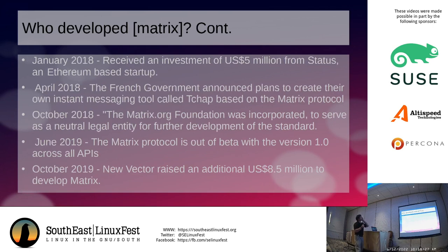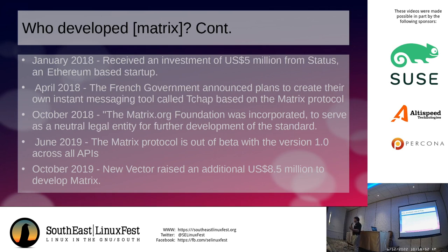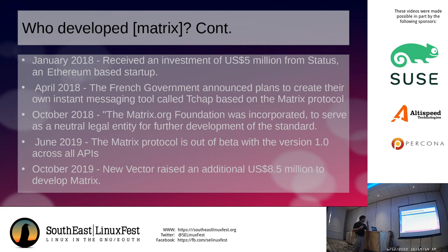Fast forward to January 2018: they received $5 million from Status, an Ethereum-based startup. Later that year, the French government announced they were going to launch their own chat app called T-Chat based on Matrix. They essentially took the reference chat client Matrix had produced, forked it, gave it a different logo and name, hard-coded it to a different server, and gave it out to everybody in the French government. October 2018, Matrix.org is founded — the idea being an organization that works on the development of the Matrix protocol apart from any corporate interests. That's going to come up again later, and it's important. June 2019, the Matrix protocol finally exits beta with version 1.0 across all the APIs.